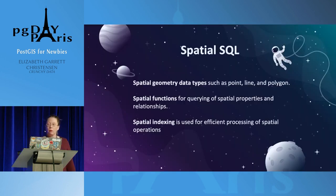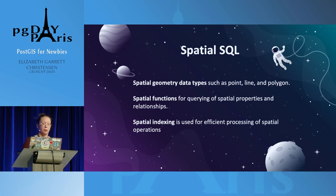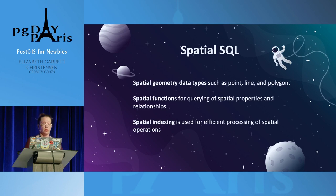Now that we have PostGIS installed and have loaded a couple pieces of data, let's look at some SQL. At a high level, you have the data types we talked about, and then there's a bunch of spatial functions that do querying, transforming, or special things. I think there are about 200 spatial functions that just come with a PostGIS install. And then there's some indexing we'll look at too.